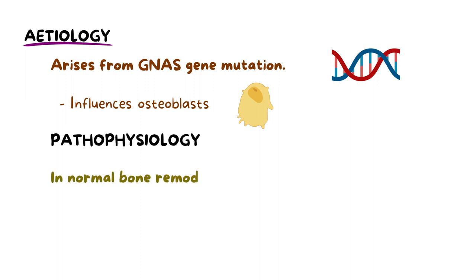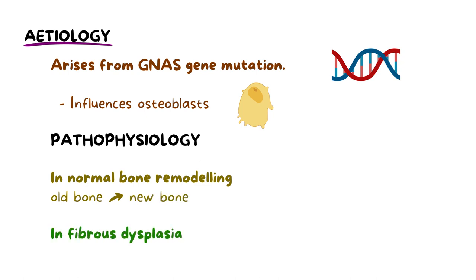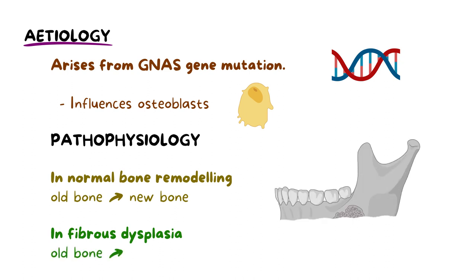In typical bone remodeling, old bone is broken down and replaced with new bone. However, in fibrous dysplasia, this process is disrupted, causing the bone to be substituted with abnormal fibrous tissue instead of normal new bone. This abnormal tissue lacks the strength and robustness of normal bone, leading to increased susceptibilities to deformities, weaknesses and fractures.